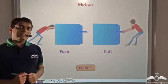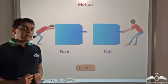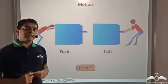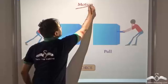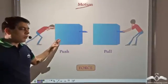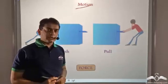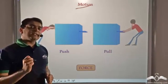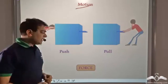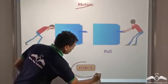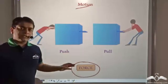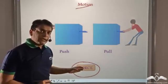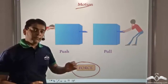So what did we just see? We saw that in order to make the box move, or to set the box in motion, we have to either push the box or pull the box. In physics, this push or pull is given a special name and it is known as force. So force is a push or a pull, and by applying force we can make an object move.